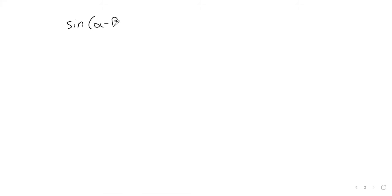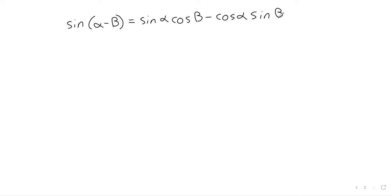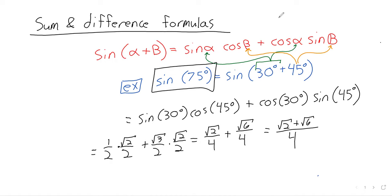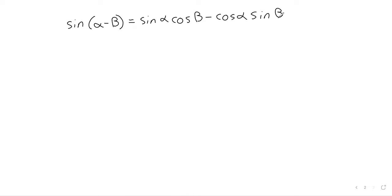The sine of (alpha − beta) is the sine of alpha times the cosine of beta minus the cosine of alpha times the sine of beta. It's exactly the same structure as the sum formula, except here we have subtraction. Addition on the left gives addition on the right; subtraction on the left gives subtraction on the right.